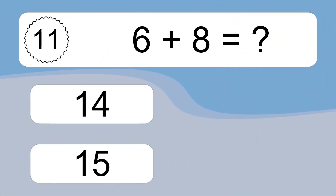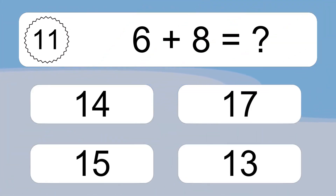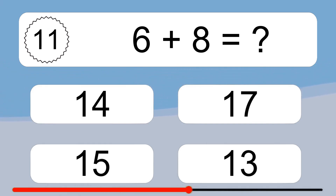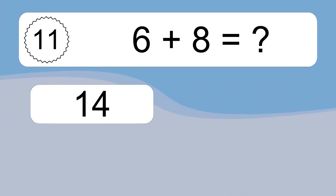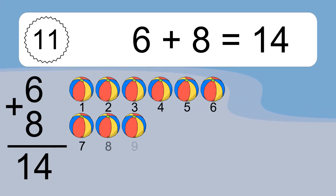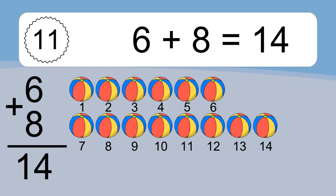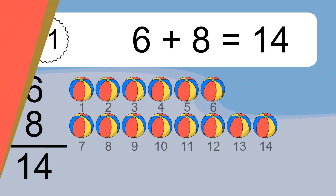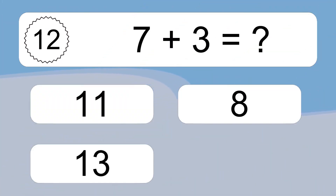Six plus eight equals what? Six plus eight equals fourteen. Let's count it: one, two, three, four, five, six, seven, eight, nine, ten, eleven, twelve, thirteen, fourteen.